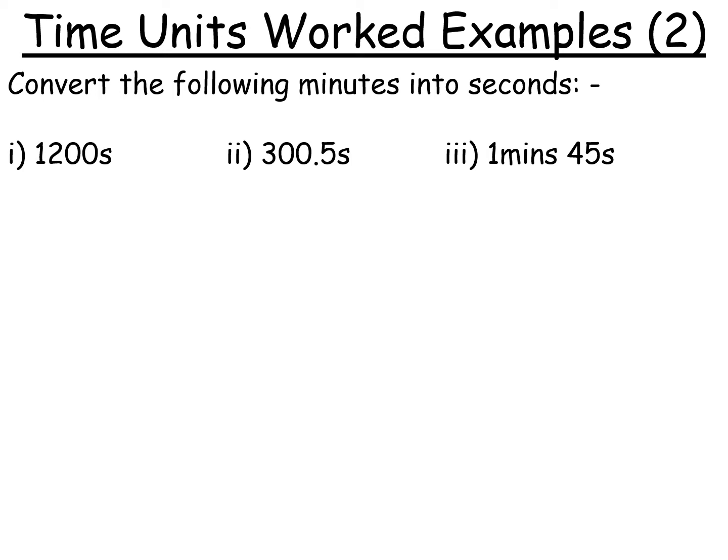I promise you, once we're getting back into class, we'll start doing some range of different things and some experimental work as well. And I've got some crackers for you lined up. I really promise you it will be fun and interesting. So back to this. How do we convert 1,200 seconds into minutes? Well, just like before, it's kind of the same process, but we're not doing multiply, we're doing divide. So it's quite straightforward. 1,200, because it's in seconds, we just divide by 60. So that gives us an answer of 20 minutes.